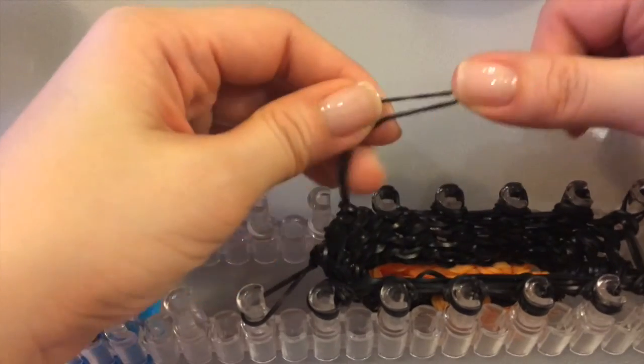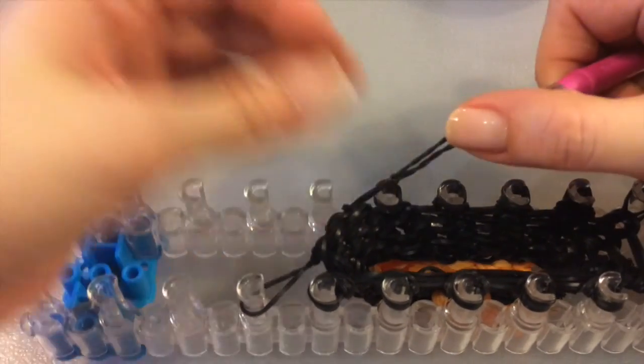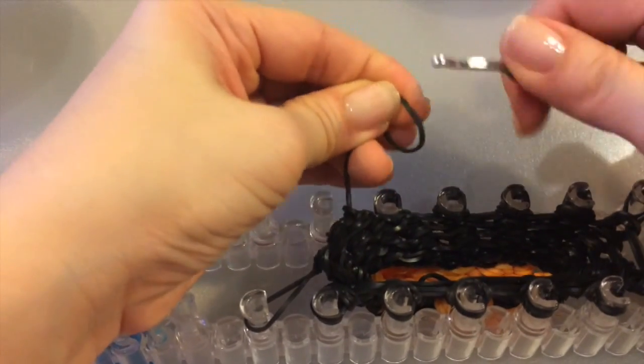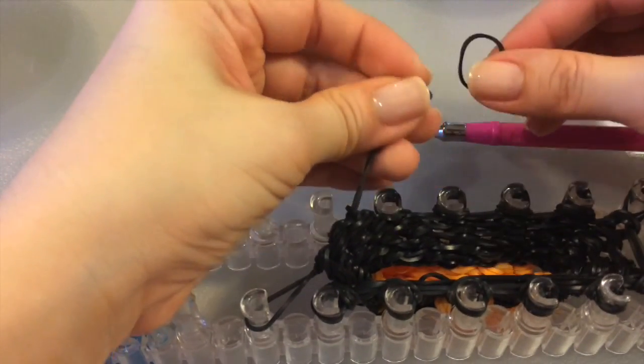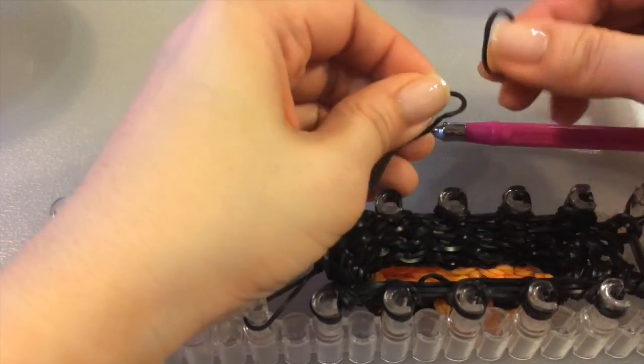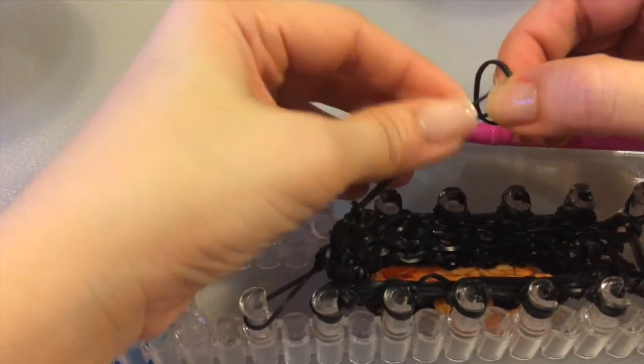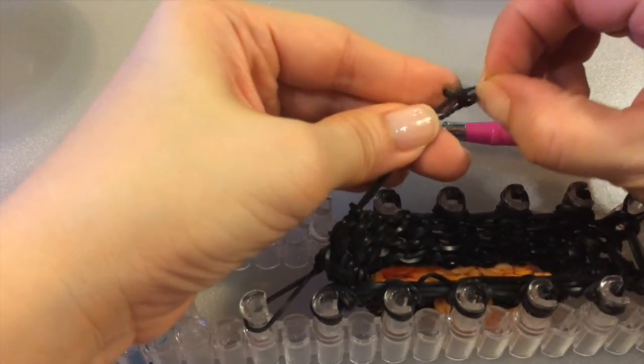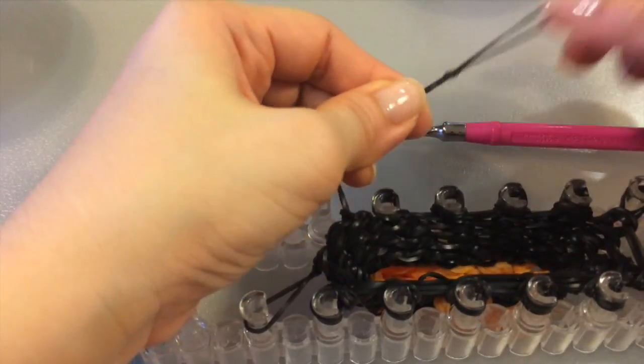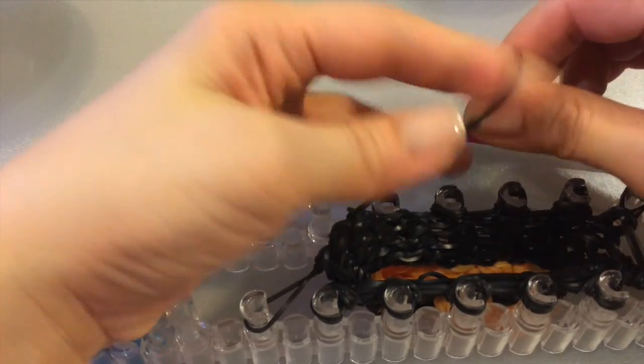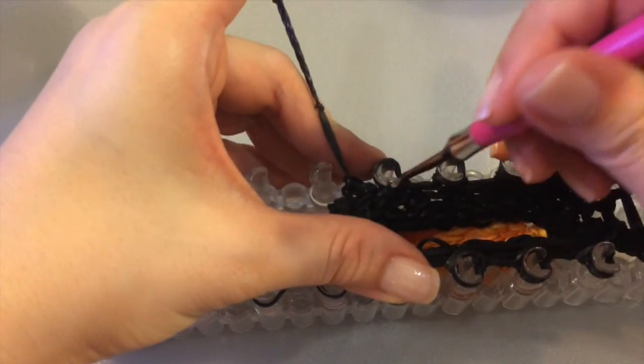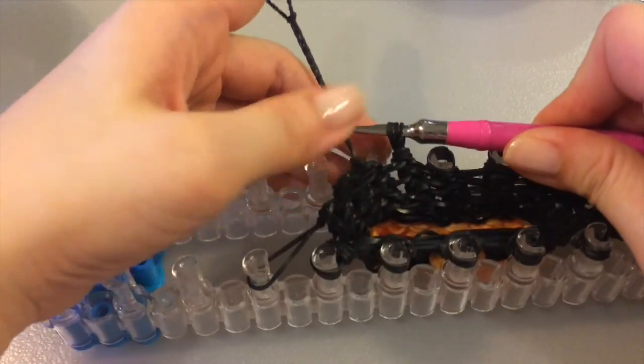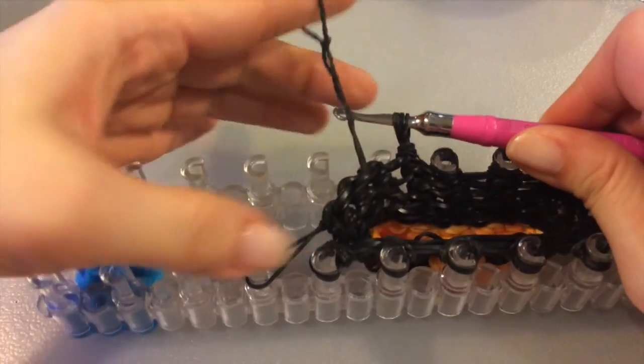If you need to add on to your sewing band, all you have to do is get another band, go to the end, and attach it with another slipknot. So continue going through each peg, all around, and I'll meet you at the end.